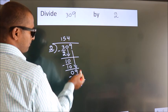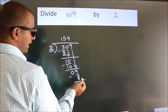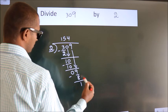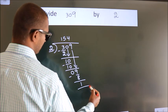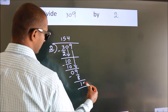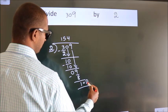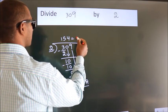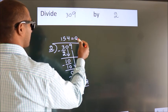No more numbers to bring down, so we stop here. This is our remainder. This is our quotient.